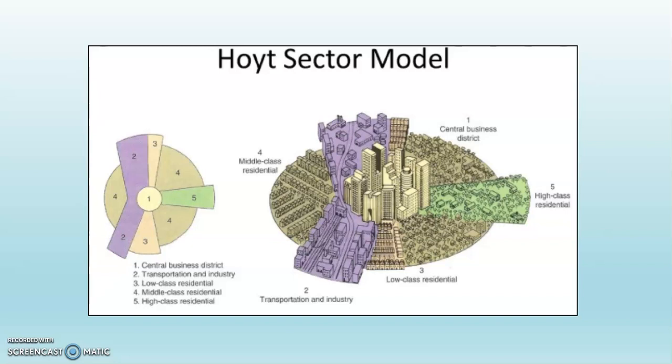Can you see that in purple? This can also morph into an extension along a major transportation route that causes the service sector of the CBD to stretch out and elongate. Visually, it starts to look a little bit like the wedges of an orange when you cut an orange into wedges.